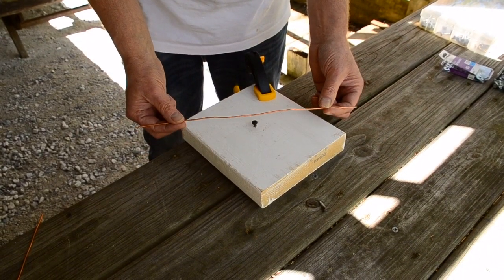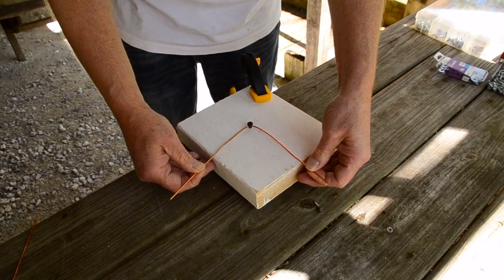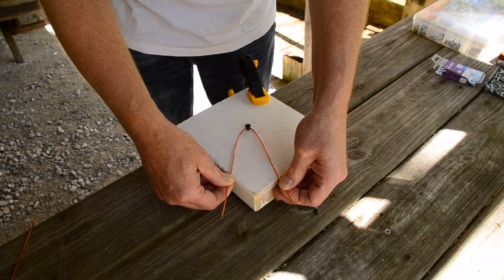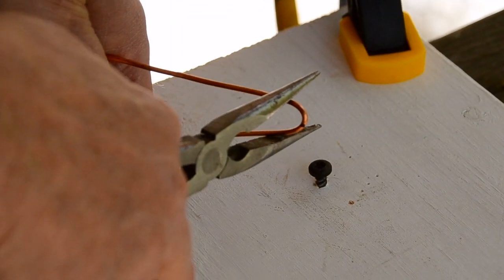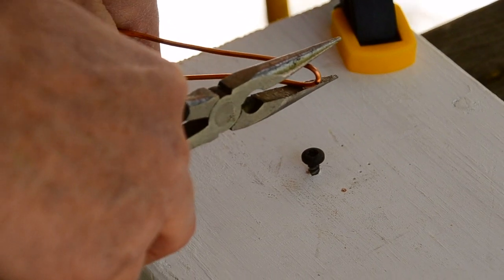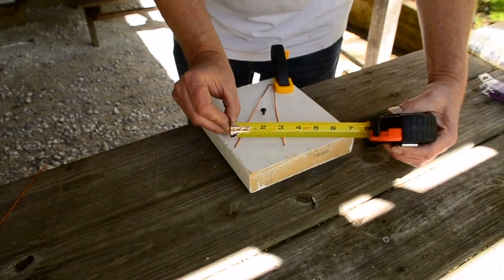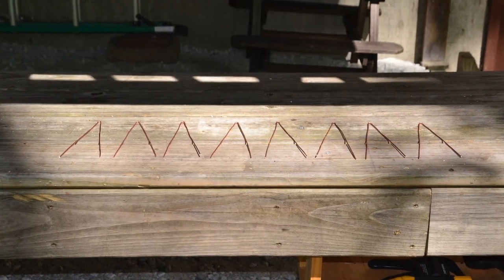I made myself a jig out of a block of wood and a screw so I could easily bend the wires. You can tighten the bend with a pair of needle nose pliers. The gap should be two and three quarters to three inches wide. And here is how the eight pieces should look.